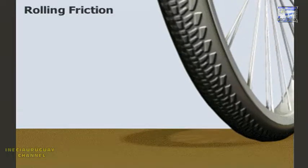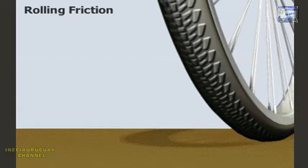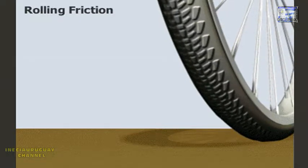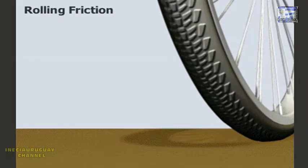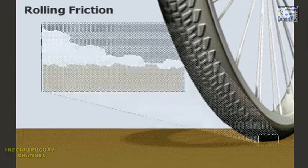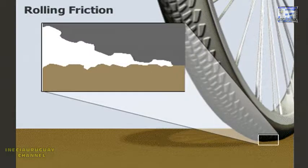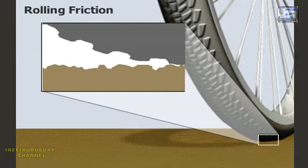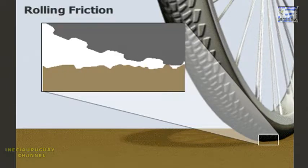When one surface rolls against another, such as a wheel on the ground, it causes rolling friction. Rolling friction resists the motion of the rolling object and slows it down, unless another force keeps it moving.